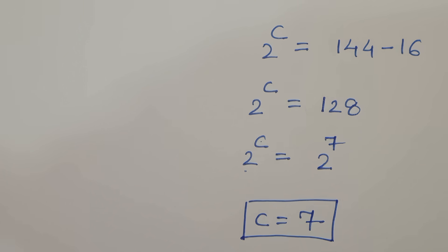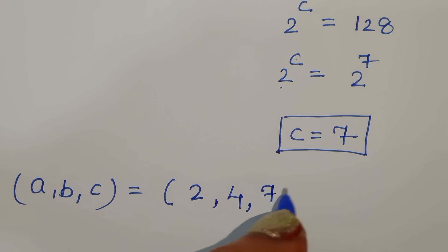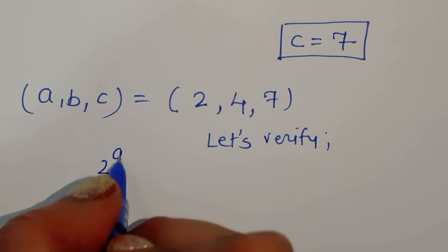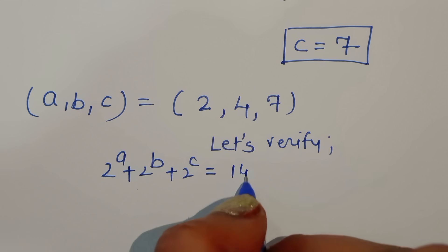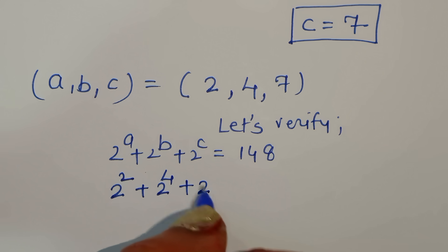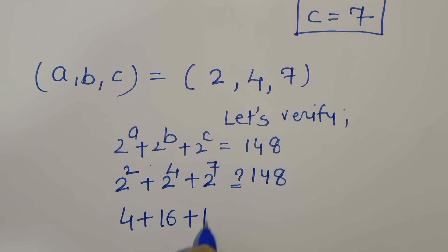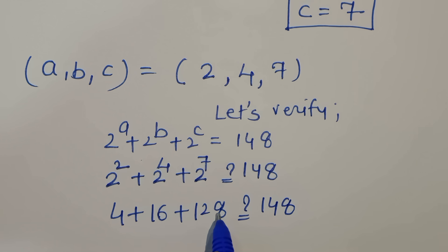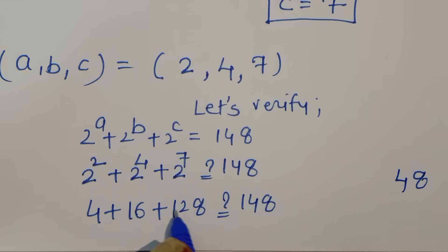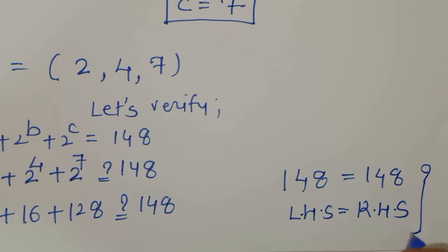So the values are a = 2, b = 4, and c = 7. Let's verify: 2 power 2 plus 2 power 4 plus 2 power 7 equals 4 plus 16 plus 128 equals 148. LHS equals RHS, so the answer is correct. Thank you.